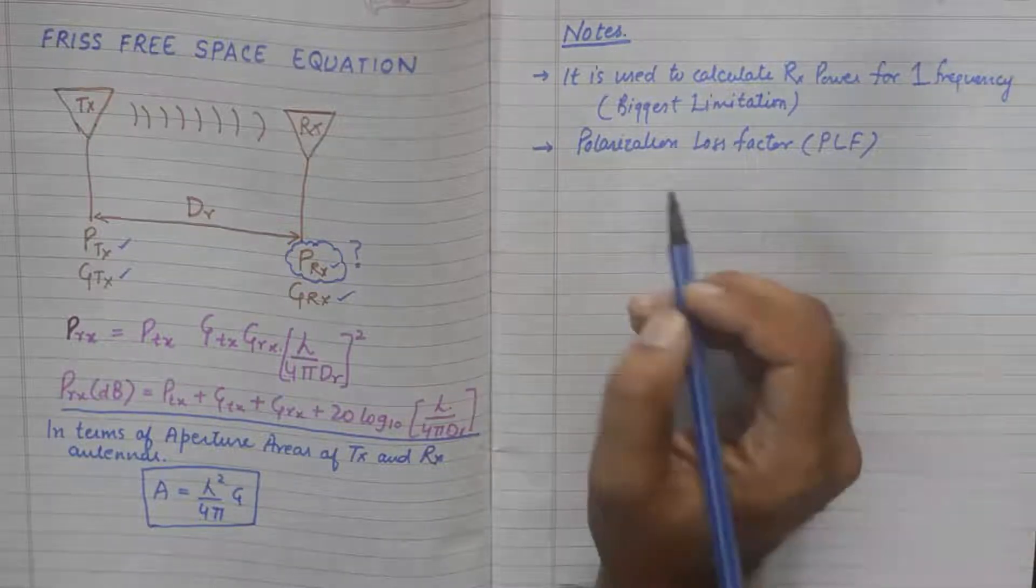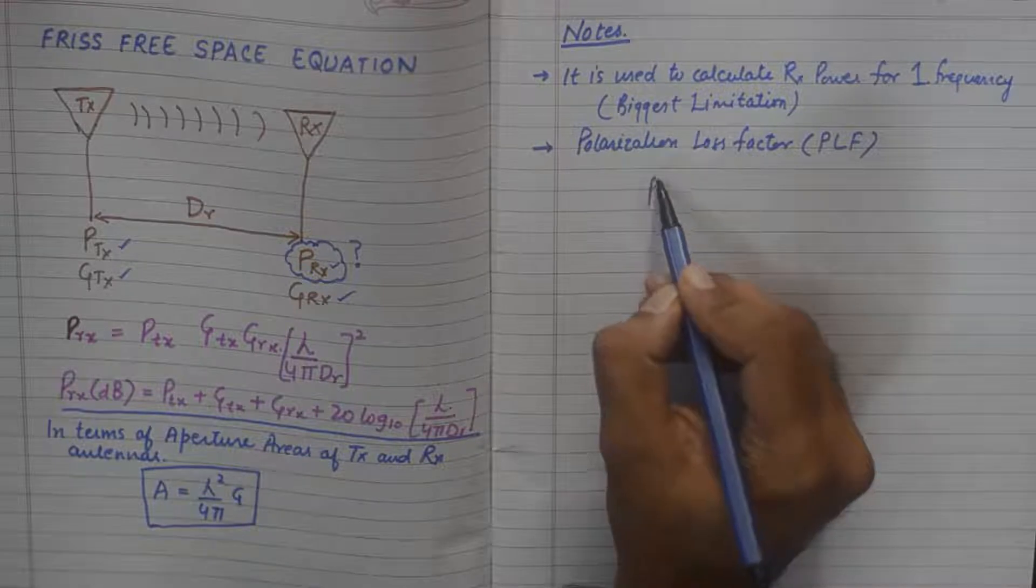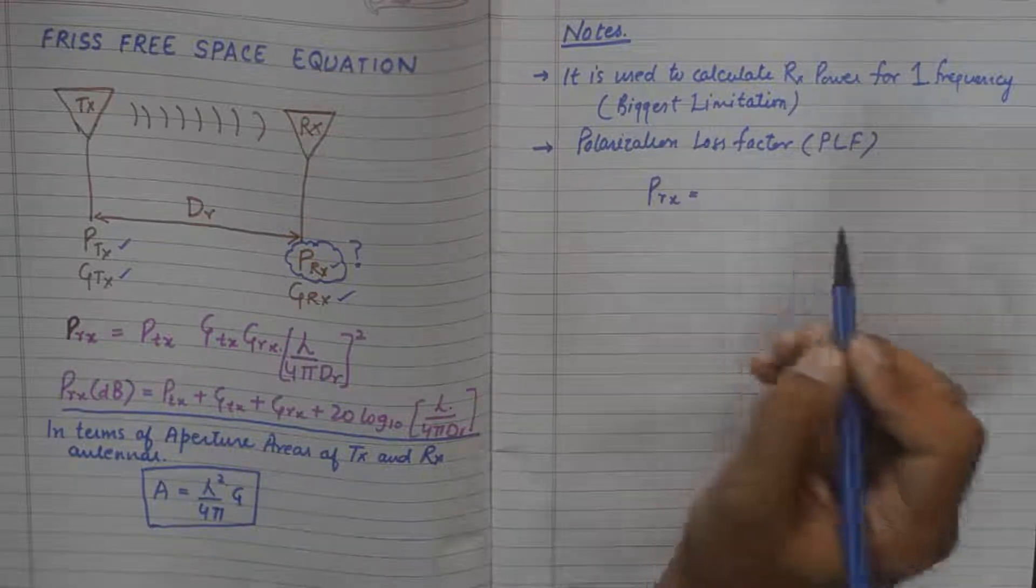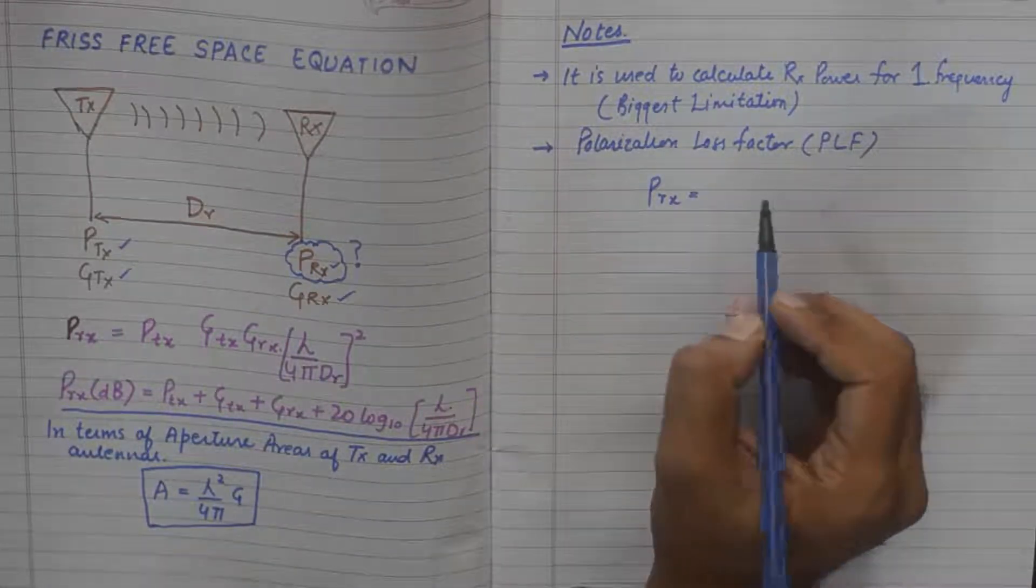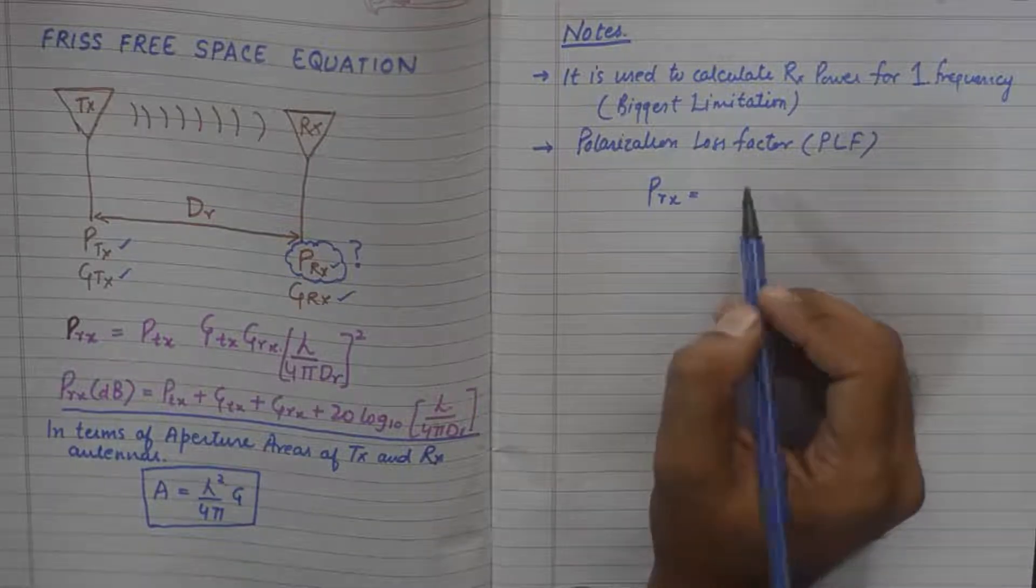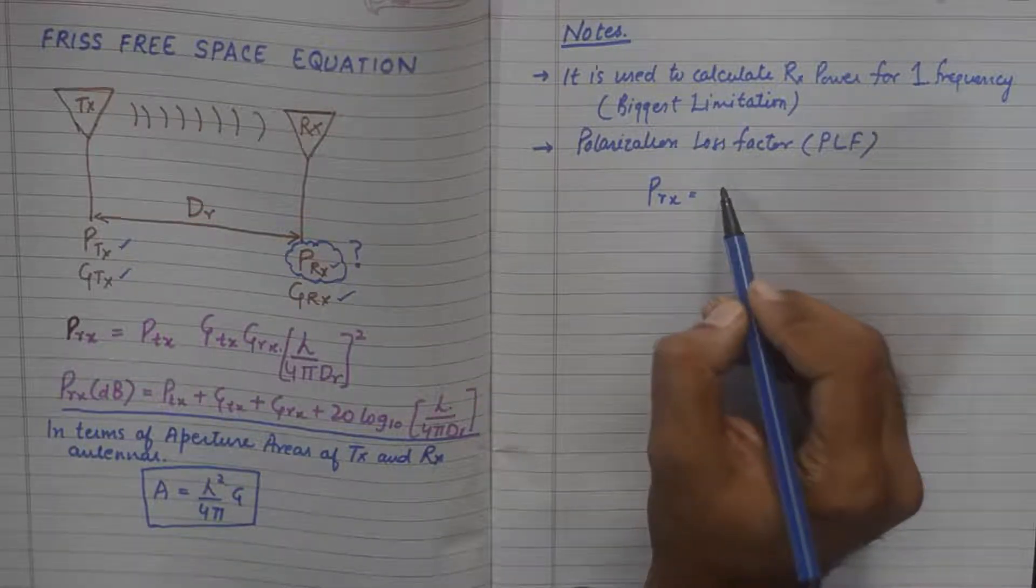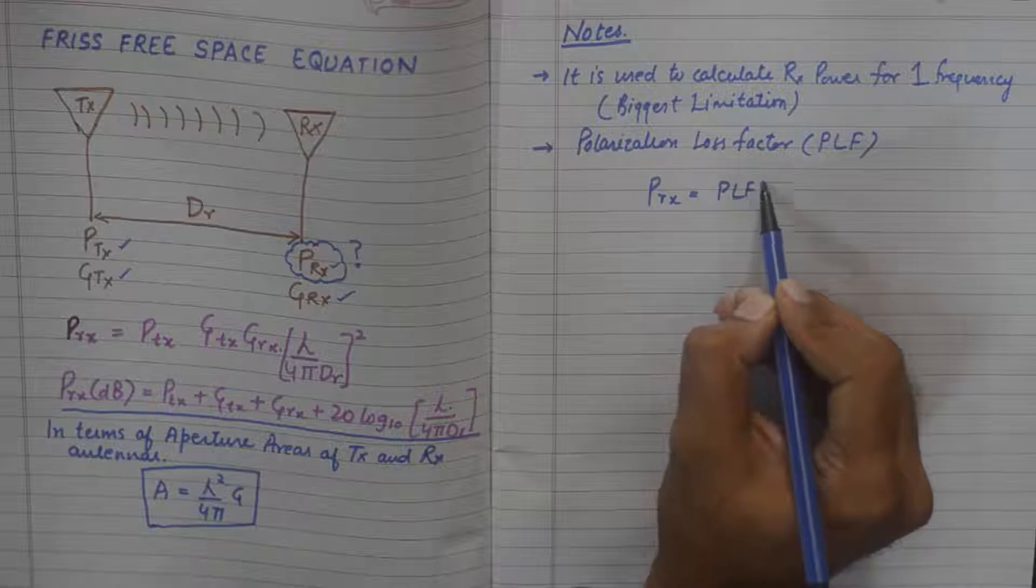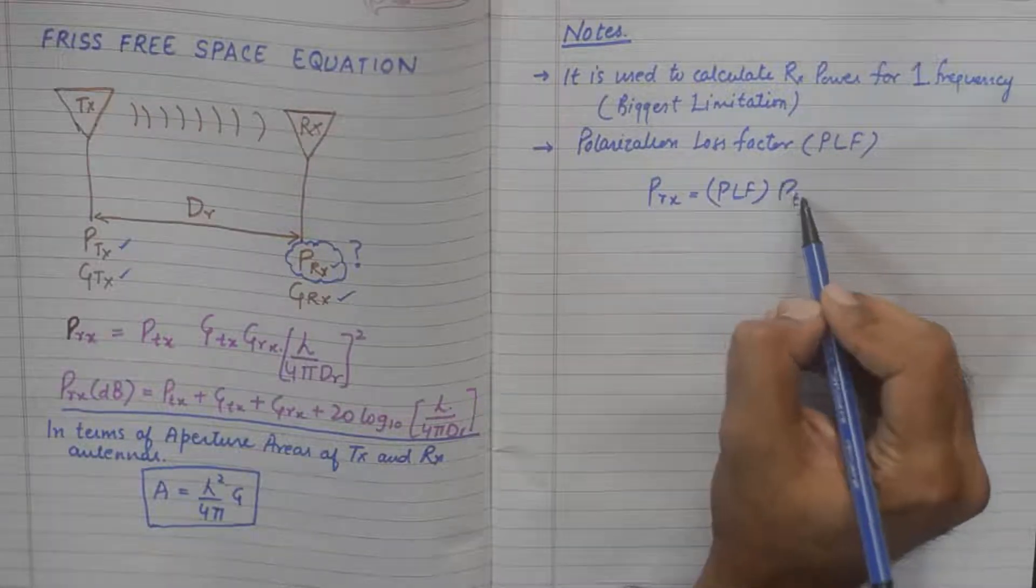Now in order to solve this, we could multiply the Friss Free Space Equation's right hand side with PLF and the rest of the equation remains the same.